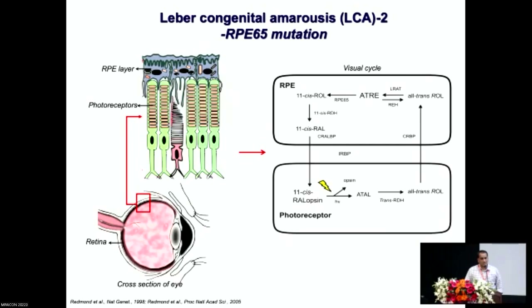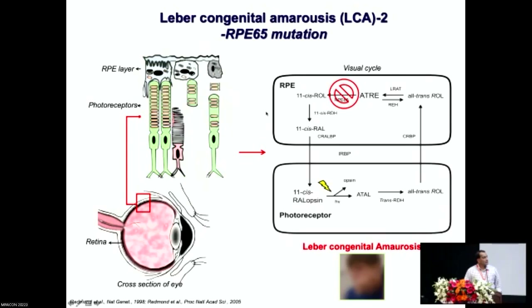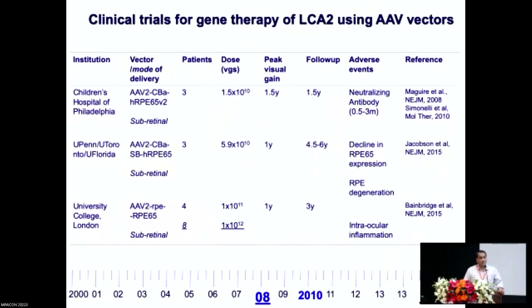In the absence of RPE65, the esters accumulate within the innermost part of the retina — the RPE layer — and this layer degrades over a period of time. When the RPE layer degrades, it can no longer support and nourish the photoreceptors, leading to visual loss. Many clinical trials have been conducted for gene therapy of LCA2. While effective for the first couple of years, what happened thereafter was generation of neutralizing antibodies against the vector, a decline in RPE65 expression, and intraocular inflammation, which reduced the effectiveness of gene therapy.